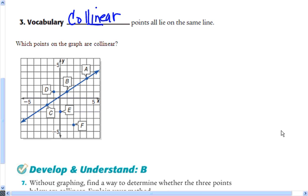And if you look at this graph, you will see that A, B, and C are all on the same line. So those three points are collinear.